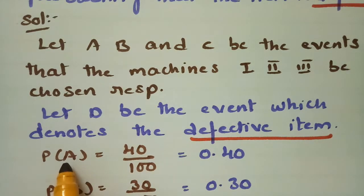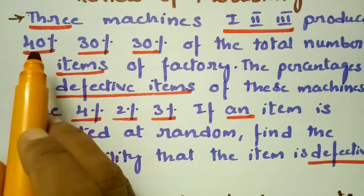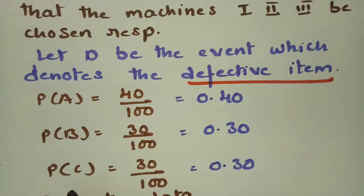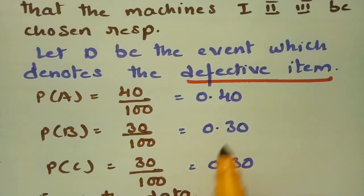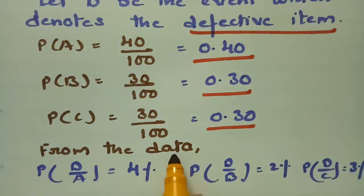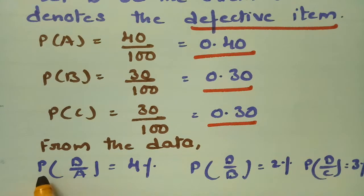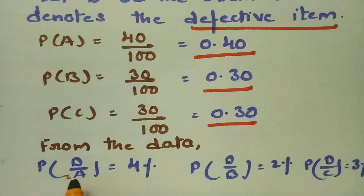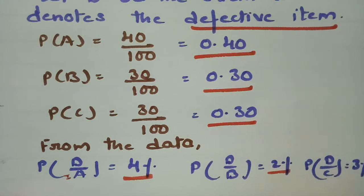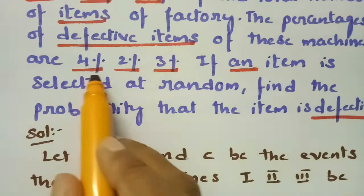The probability P(A) = 40/100 = 0.40, P(B) = 30/100 = 0.30, and P(C) = 30/100 = 0.30. From the data, the conditional probability that a defective item comes from machine 1 is 4%, meaning machine 1 should produce an item and it should be found defective — this is a conditional probability. So P(D|A) = 4%, P(D|B) = 2%, and P(D|C) = 3%.